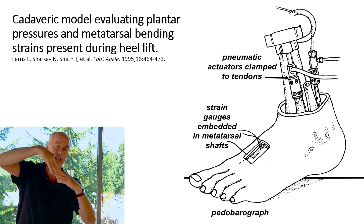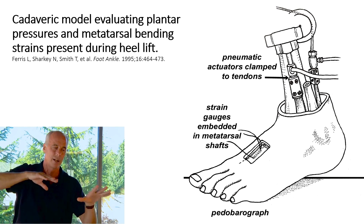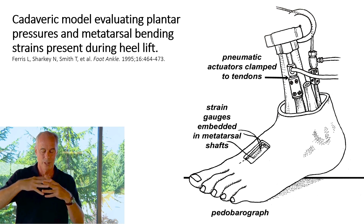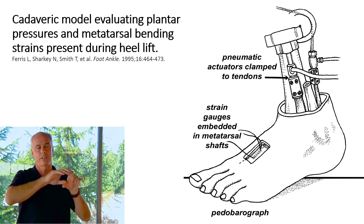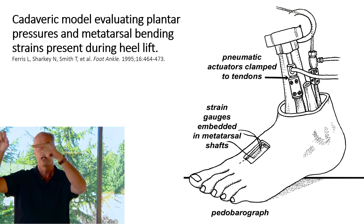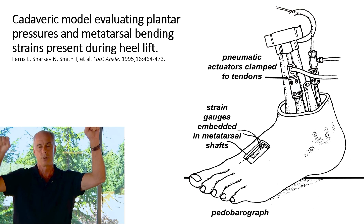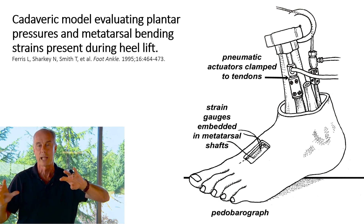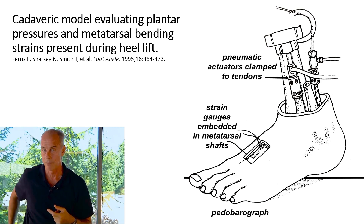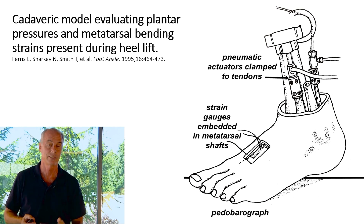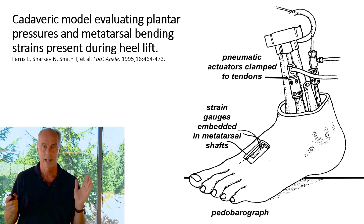As long as they were pulling on the flexor hallucis longus and flexor digitorum longus with the pneumatic actuators, the metatarsals were stable. But as soon as they released that tension, the metatarsal shafts started to buckle. The long digital flexors aren't just for force production under the toes — they protect the metatarsals from fracturing and bending, like a steel cable preventing a branch from breaking. Flexor digitorum and flexor hallucis longus are powerful stabilizers of the metatarsal shafts. After reading this article, I started treating all metatarsal stress fracture patients with strengthening exercises for flexor digitorum longus and flexor hallucis longus, and outcomes went through the roof.